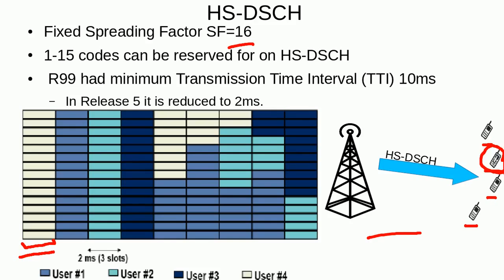For the next 2 milliseconds, if a different user equipment has good channel conditions and is receiving good SNR, those 15 codes can be assigned to that user equipment. This is how Node B schedules users. It is also possible to assign, for example, 8 codes to one user and 7 codes to another, if the data rate requirement of those user equipments is moderate and there is no need to assign all codes to a single user.